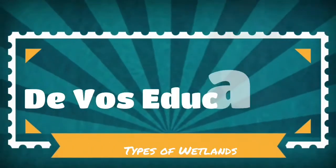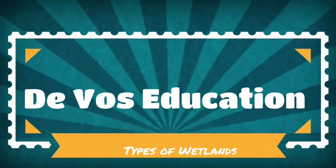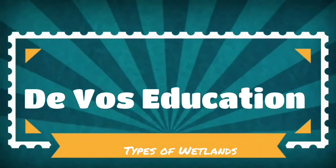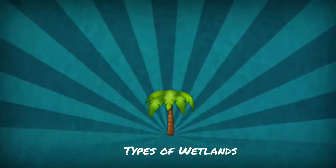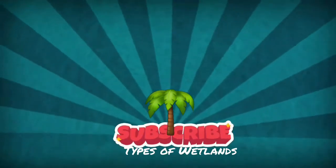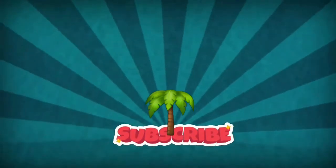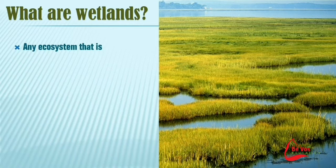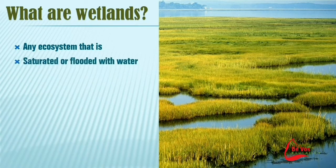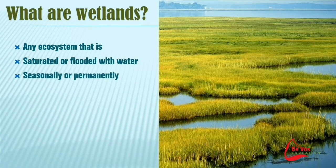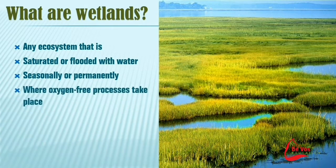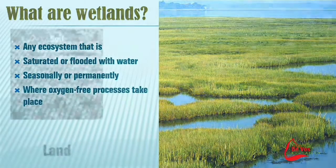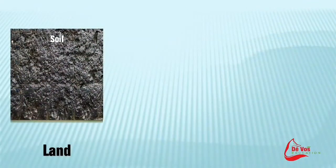Welcome to another look at our wonderful biodiversity. In this one we're going to look at the different kinds of wetlands that we find. So what are wetlands? It's an ecosystem that is saturated or flooded with water either seasonally or permanently and where oxygen-free processes take place.